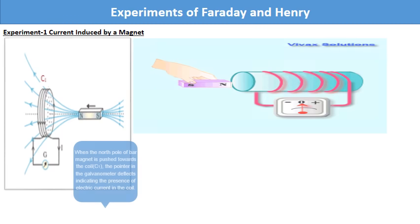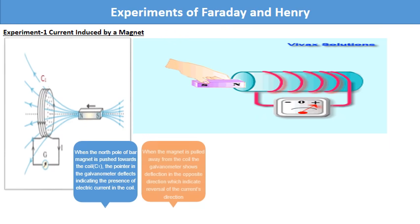When the north pole of bar magnet is pushed towards the coil C1, the pointer in the galvanometer deflects, indicating the presence of electric current in the coil. The deflection lasts as long as the bar magnet is in motion. The galvanometer does not show any deflection when the magnet is held stationary. When the magnet is pulled away from the coil, the galvanometer shows deflection in the opposite direction, which indicates reversal of the current's direction.